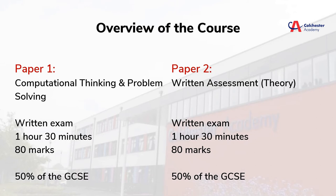Just a reminder of the overview of the course. The course includes two papers. Paper 1 is Computational Thinking and Problem Solving — a written exam, 1 hour and 30 minutes, 80 marks, worth 50% of the GCSE. Paper 2 is the Written Assessment, also known as the Theory Content — also a written exam, 1 hour and 30 minutes, 80 marks, and again 50% of the GCSE.